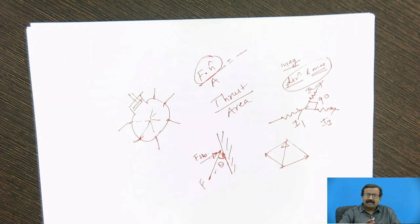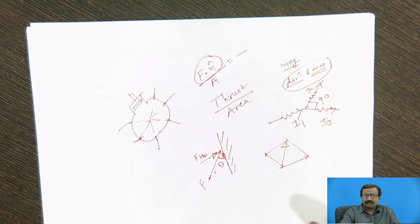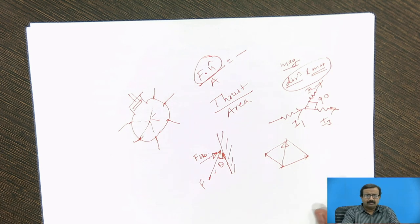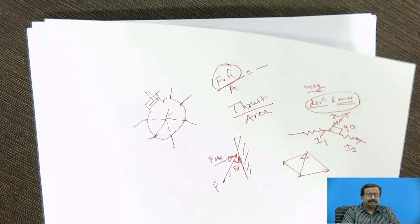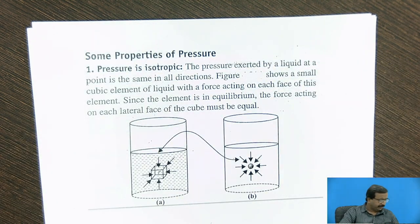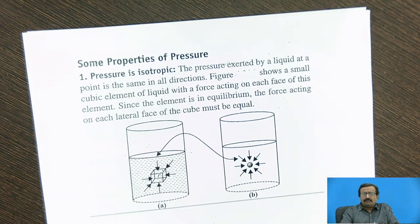That's why it adds like a scalar. If I add, there is no addition like a vector. It adds like a scalar quantity. Okay, I think this much is sufficient for you about the pressure scalar or vector. Now we'll go to the next important parameter in this session, that is some properties of fluid.